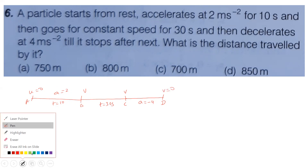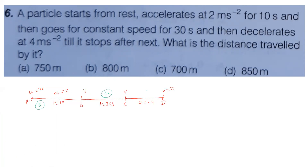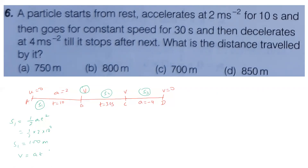S1 equals half A T squared equals half into 2 into 100 equals 100 meter. Velocity at end of phase one: v equals u plus at equals 0 plus 2 into 10 equals 20 meter per second. S2 equals velocity into time equals 20 into 30 equals 600 meter. For phase three, C to D: initial velocity 20, final velocity 0, acceleration minus 4.